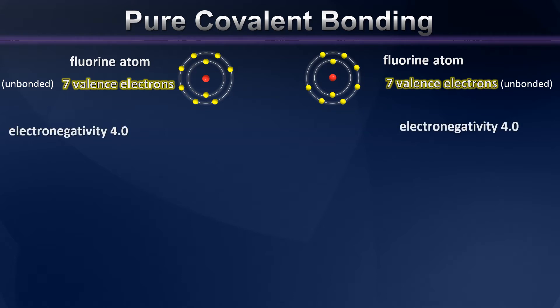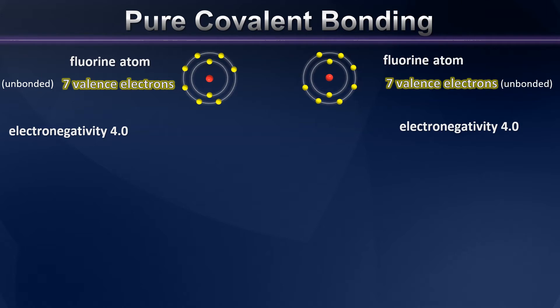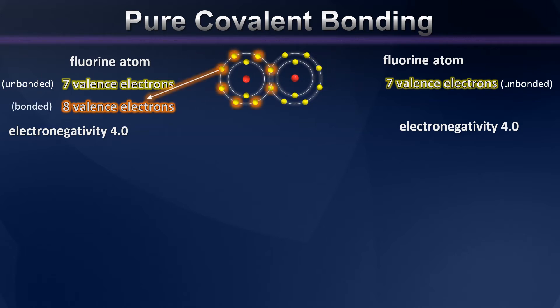The problem we run up against here is that fluorine atoms, having similar electronegativities, both want to receive an electron. Neither is willing to donate an electron in an exchange process like we would see in ionic bonding. So what are our fluorine atoms going to do? Well, if they come close enough together, they can share some of their valence electrons.